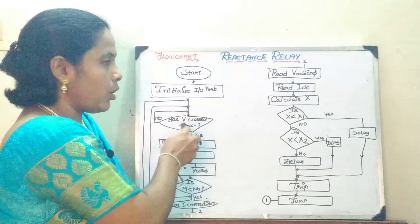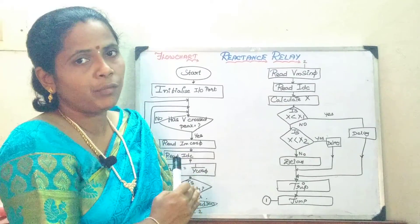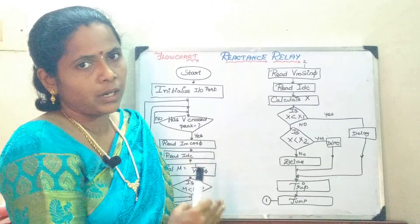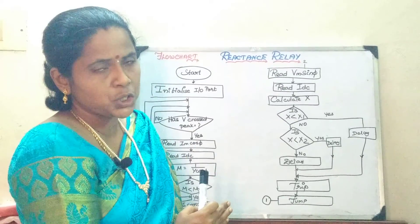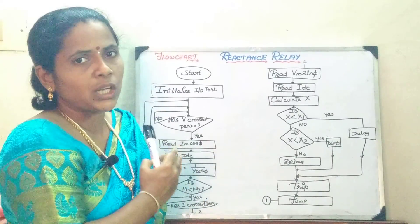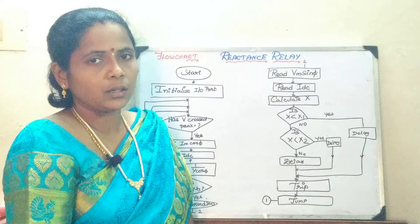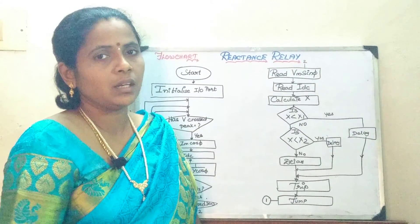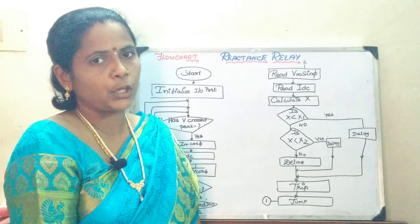When the voltage has crossed its peak only, you can compute the reactance. The reactance relay offers protection for a three-zone protection, and it is inherently not a directional relay. So you have to add a directional relay to check for the fault in one direction. With this, I conclude today's session. In the next session, we will be seeing about the admittance relay. Thank you.